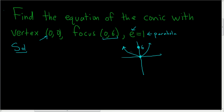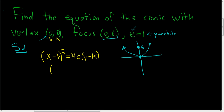Since we have a parabola that opens up, the general formula is (x − h)² = 4c(y − k). In this case the vertex is (0, 0), so h = 0 and k = 0. This gives us x² = 4cy.